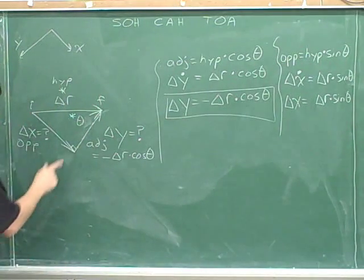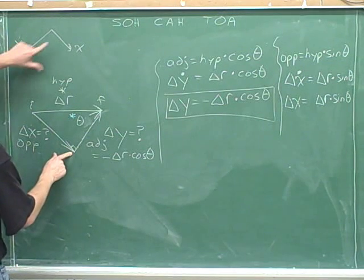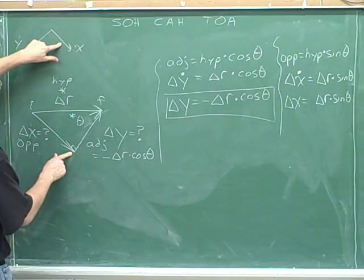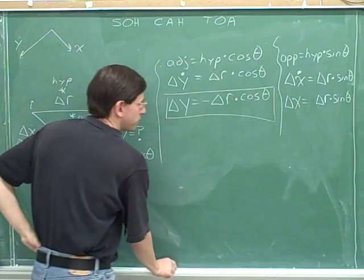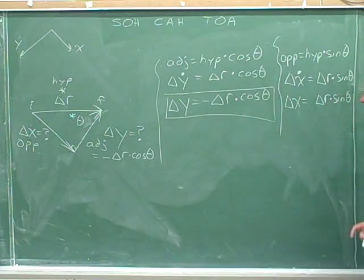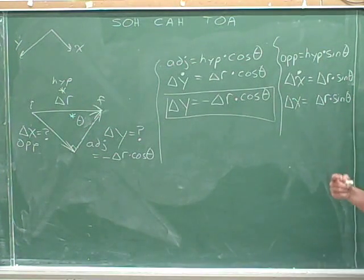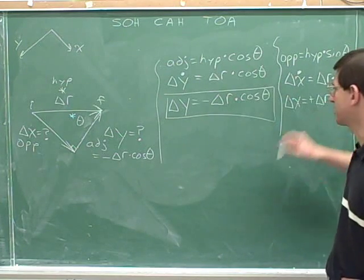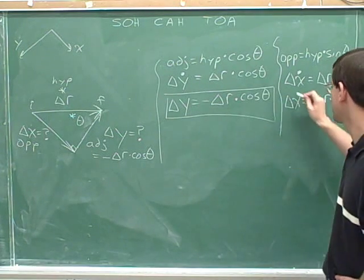Delta x was pointing down and right. And the positive x-axis is indeed pointing down and right. So that turned out to be positive. We have to indicate that it's positive by putting in a positive sign, just like we would indicate something negative with a negative sign.